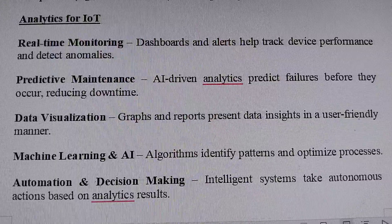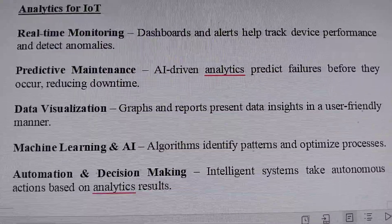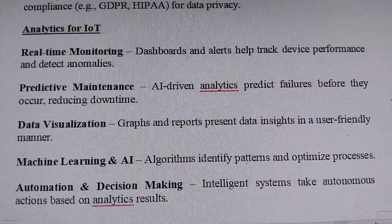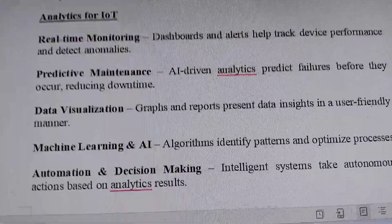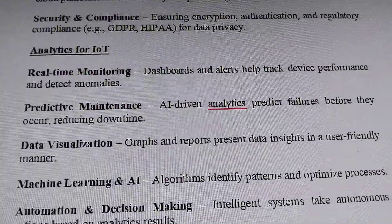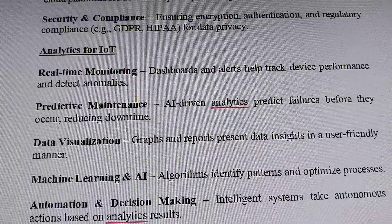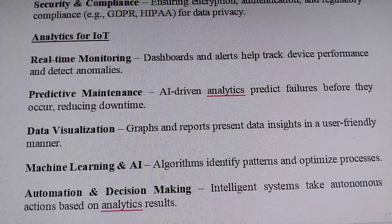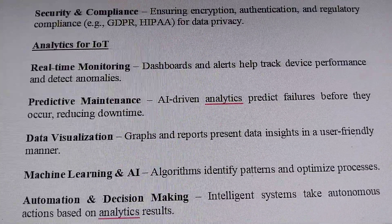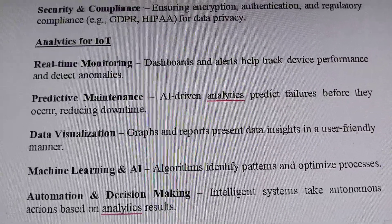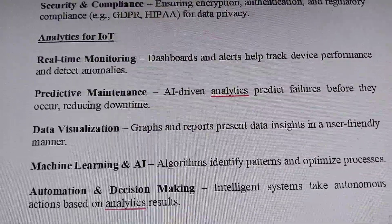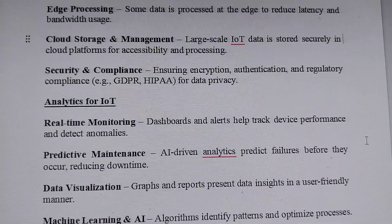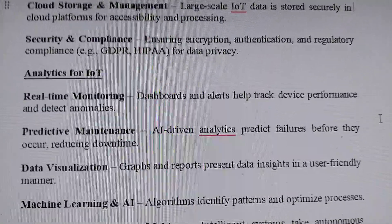The fourth analytic is machine learning and AI. Using ML and AI techniques, it is easy to identify patterns in the data and optimize processes. The last one is automation and decision making — intelligent systems take autonomous actions based on analytical results. Automation means without any person's interaction, the system will take the required decision. These are the analytics of IoT. Thank you everyone, please subscribe and like our YouTube channel.